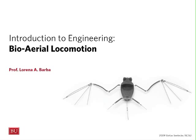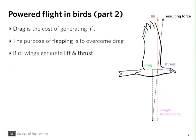Hello and welcome to another bi-aerial locomotion class video. This is part 2 on powered flight in birds. Part 1 explained how thrust is generated on a propeller blade. Part 2 uses this knowledge to explain how a bird generates thrust.